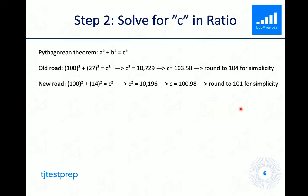And we can continue the same process for the new road and get 100 squared plus 14 squared is equal to c squared. And once again, if we solve that, we will get c is equal to 100.98, which again, we can round up to 101 for simplicity.